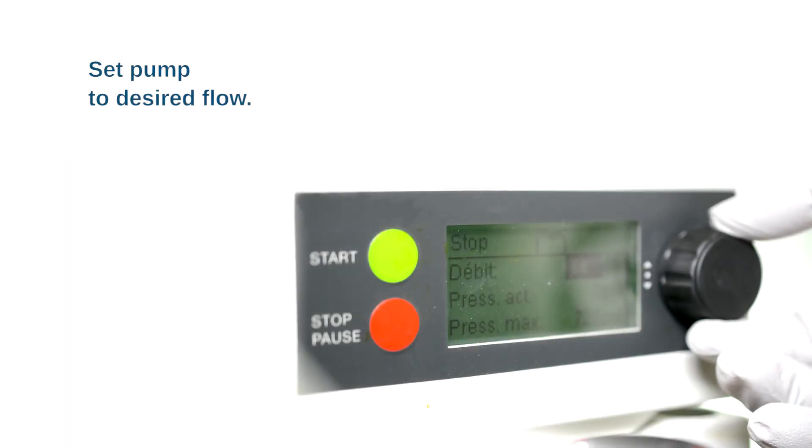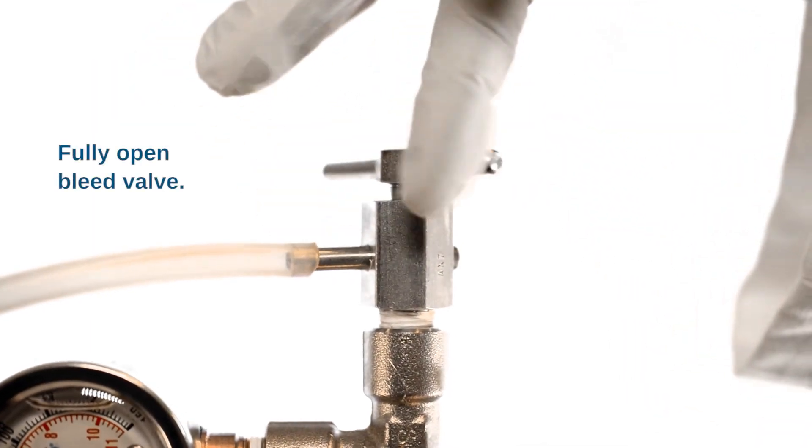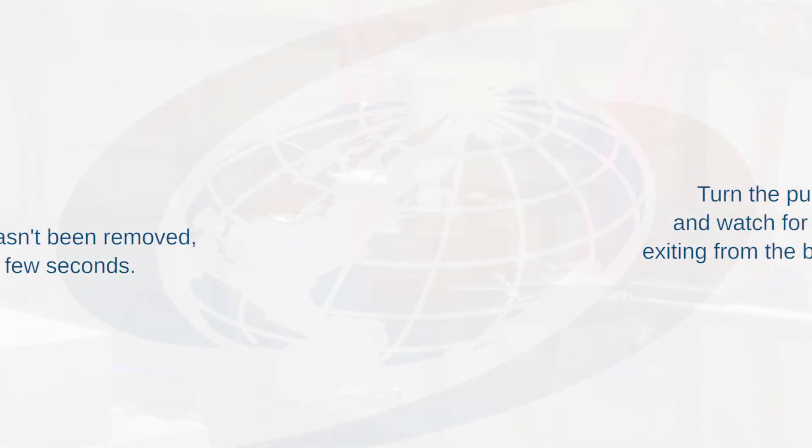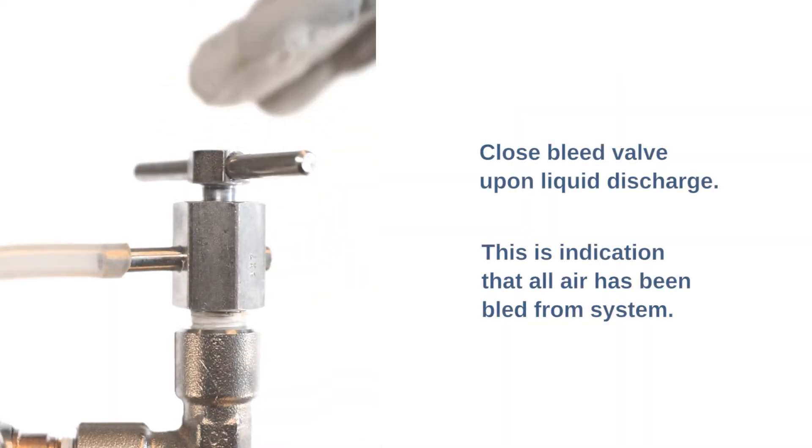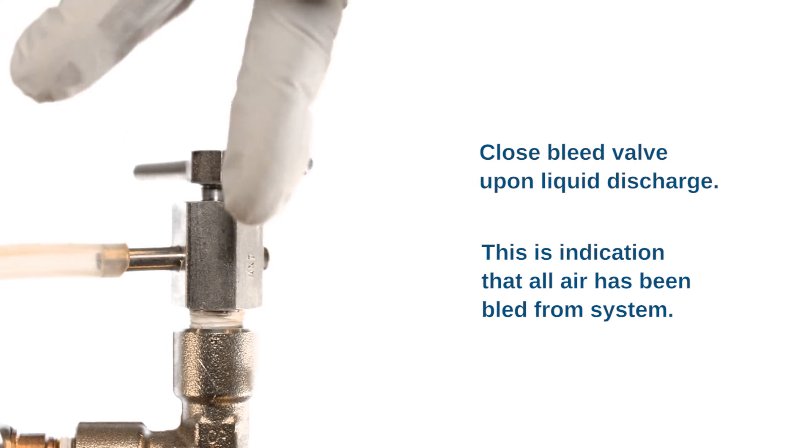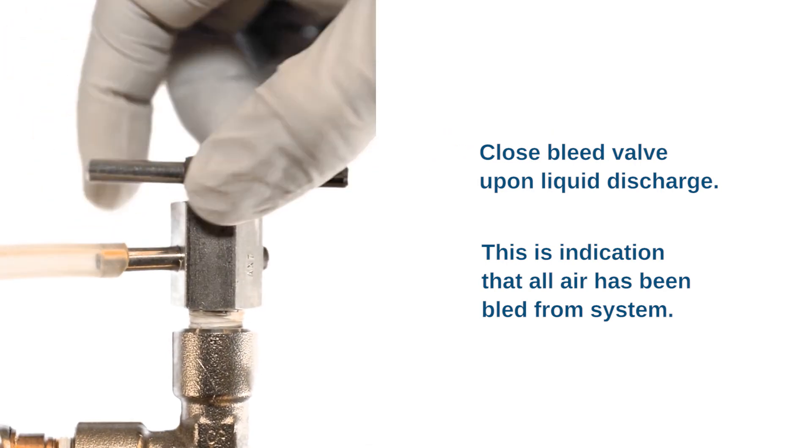Set pump to desired flow. Fully open bleed valve. Turn the pump on and watch for test fluid exiting from the bleed valve. If the pre-wash solvent hasn't been removed, it might take only a few seconds. Close bleed valve upon liquid discharge. This is indication that all air has been bled from system.